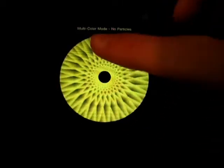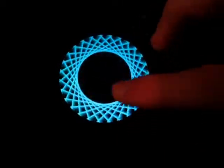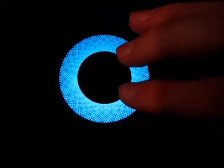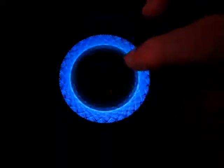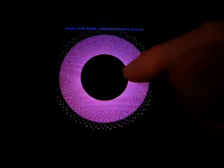As you can see, you can triple tap here, change the mode, multicolor mode with no particles. Triple tap again. There we go. Now we've got some particles.